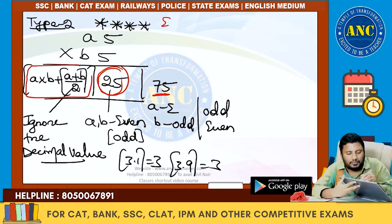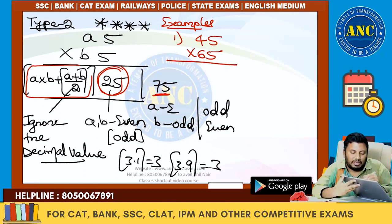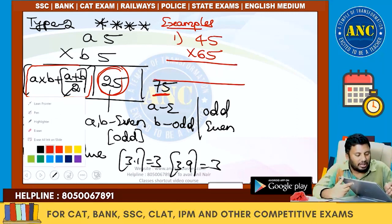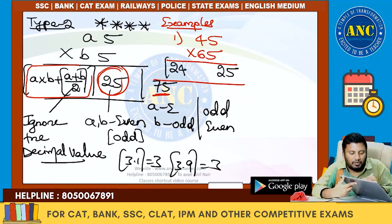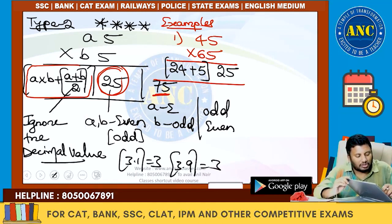Example 1: 45 × 65. Even 5 into even 5 – last two digits is 25. A × B = 4 × 6 = 24. A + B by 2 = 10 / 2 = 5. So the leading digits are 24 + 5 = 29. Answer is 2925.